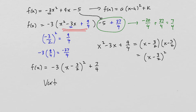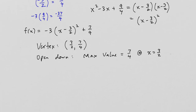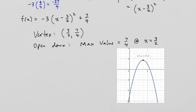The vertex for this parabola is (3/2, 7/4). It opens down, which means it has a maximum value equal to the y-coordinate of the vertex, which is 7/4. That occurs at x = 3/2. The graph confirms the vertex at x = 1.5 (same as 3/2) and y = 1.75 (same as 7/4), opening downward with a maximum value of 1.75.